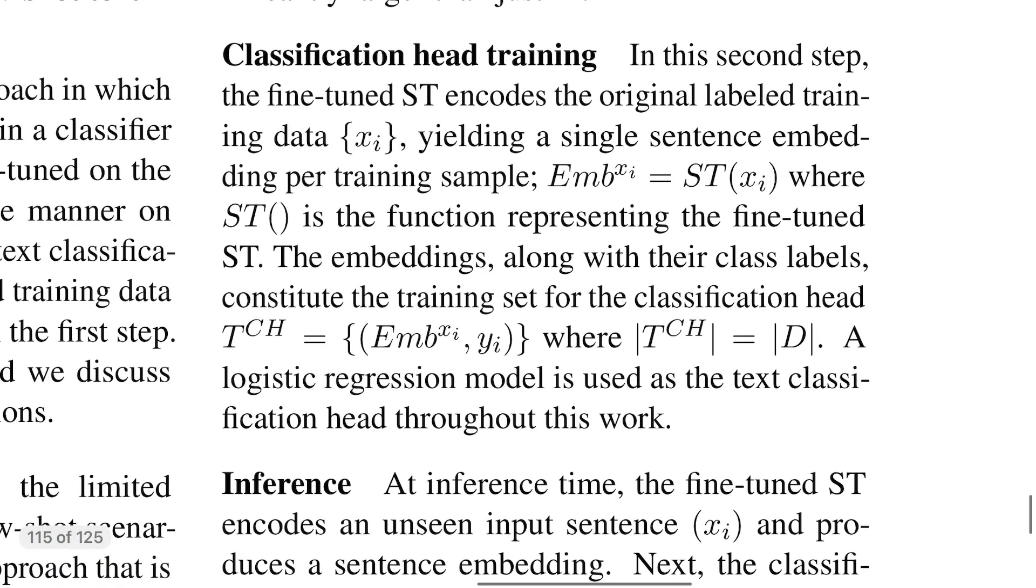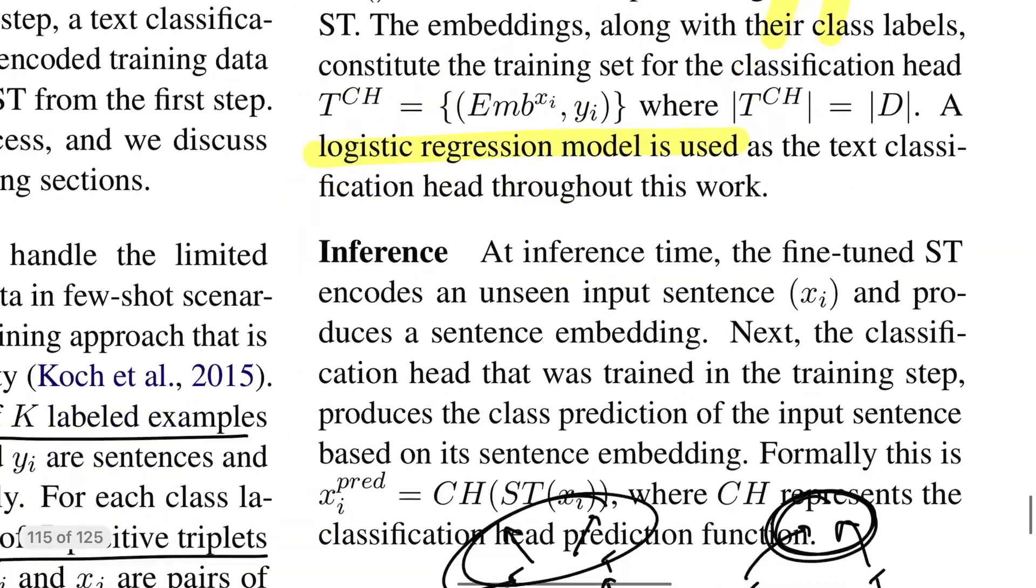That is how you go about training your sentence fine-tuning function using contrastive loss. Once that is done, the next step is to train a classification head, which is easy because you already have a sentence embedding model. You pass a sentence xi through that transformation function, you get an embedding of 768 dimensions for example, then you simply pass it to a logistic regression model and do the classification.